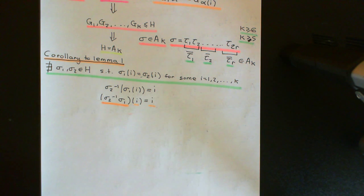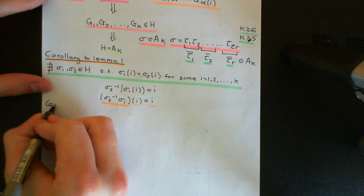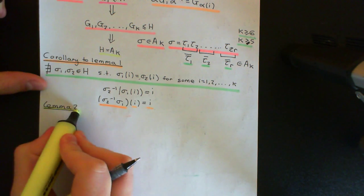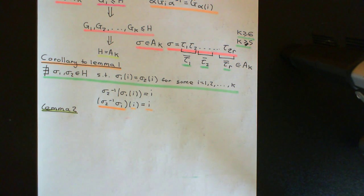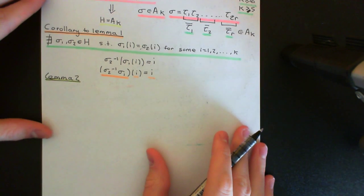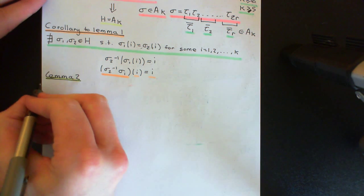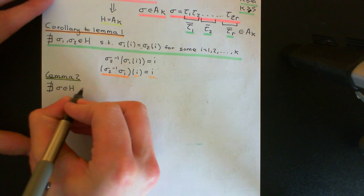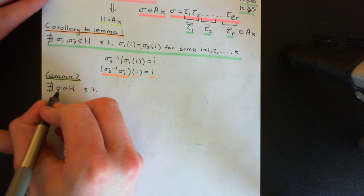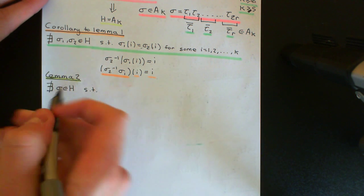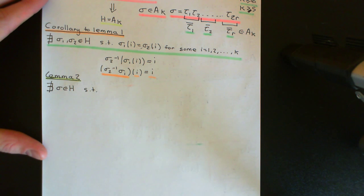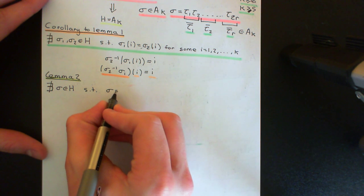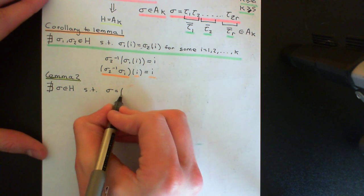We're now going to use this corollary to prove Lemma 2 and Lemma 3, which are going to restrict the subgroup further. Lemma 2 states that there cannot exist an element in H such that, when you take its cycle decomposition, it contains a cycle of length 3 or greater. So there does not exist a sigma inside H such that its cycle decomposition contains a cycle of length ≥ 3.